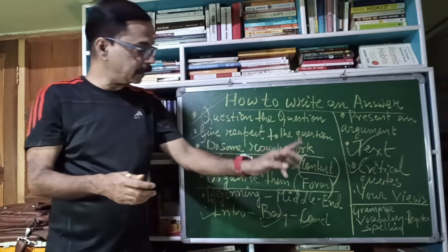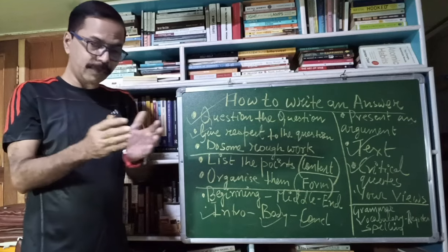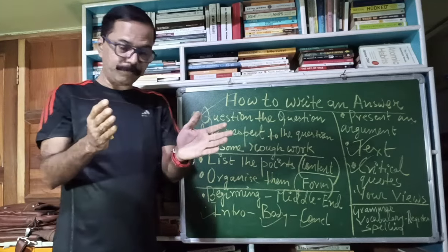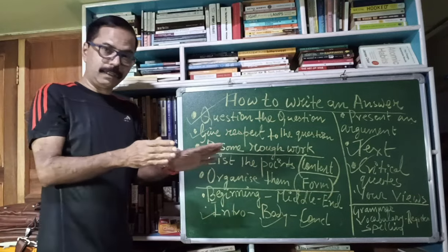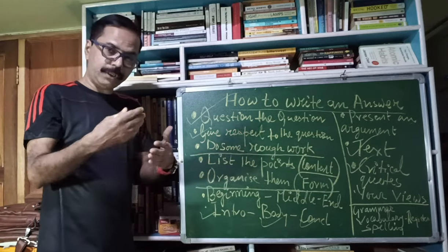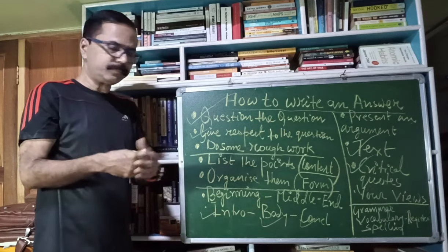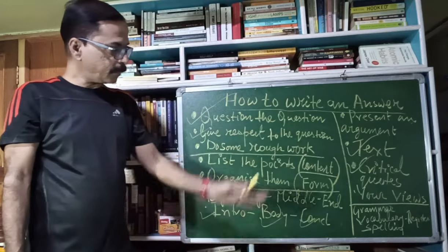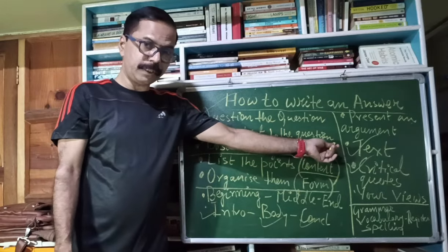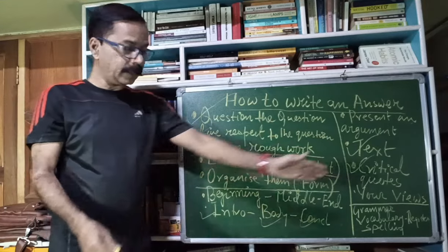So along with textual quotations and critical quotes, you should also give your own view. And that will be your final summing up. So this is how an answer should be written in your literature exams. It will require a lot of background reading, clever reading, then selecting certain quotations to be used in your answers, reading of certain, so text should be read, context should also be read. So critical essays need to be read.